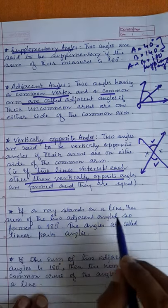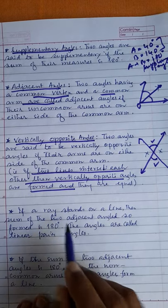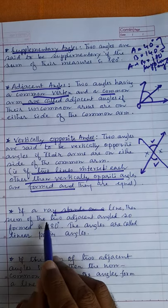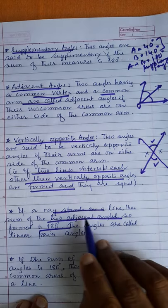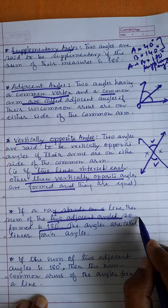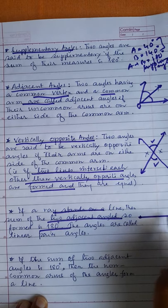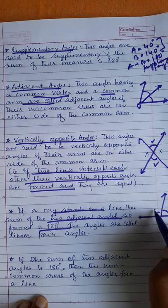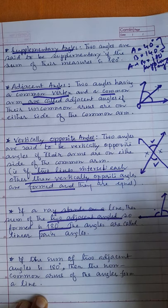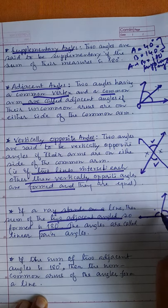Next: if a ray stands on a line, then the sum of the two adjacent angles formed is 180 degrees. This is a line, and a ray stands on it. The two adjacent angles formed — the ray is the common arm and these two are on the other sides of the common ray. The complete angle along the line is 180 degrees.